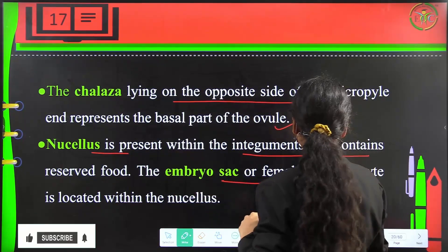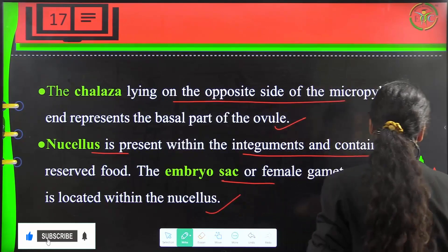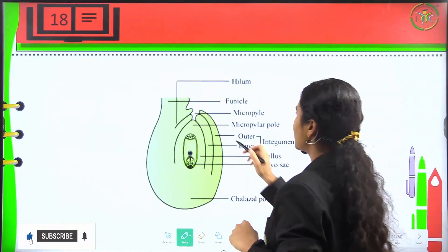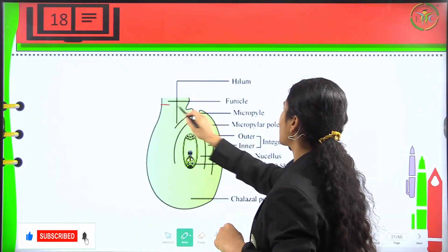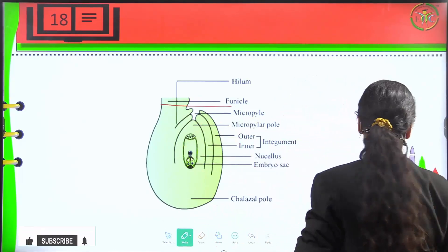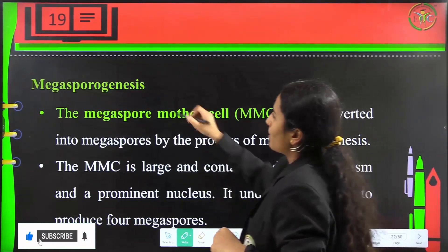The embryo sac, or female gametophyte, is located within the nucellus. This is how it will appear — this is the basal part and here is the micropyle.